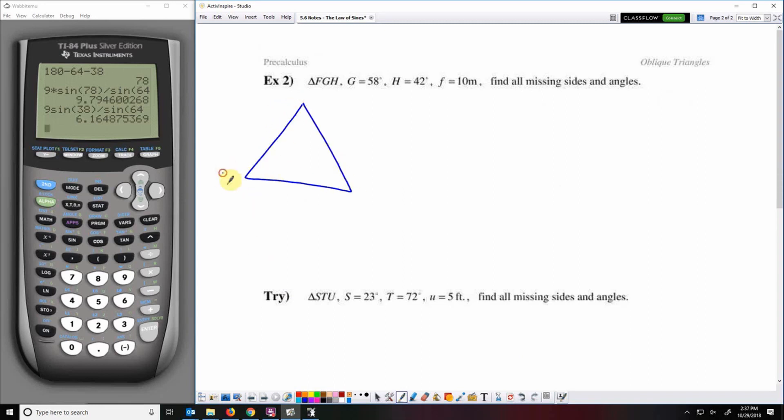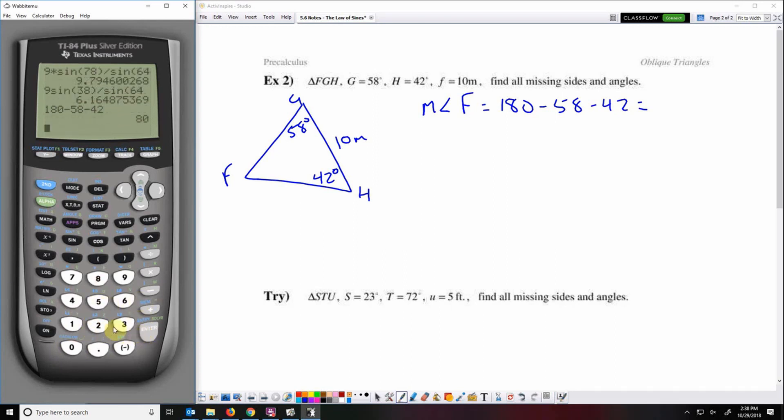Example two, triangle FGH. G is 58 degrees, H is 42 degrees, F is 10 meters. Find everything that's missing. So we'll start with angle F. 180 minus the two angles we know. So F is 80 degrees.